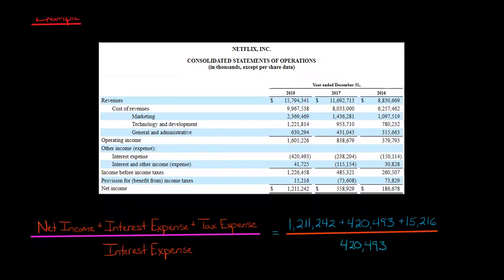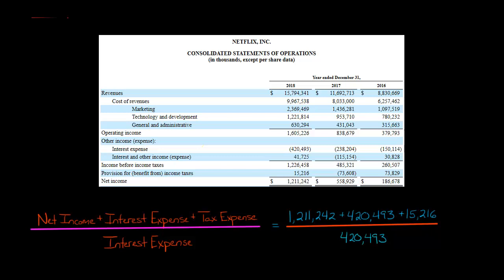We're going to calculate it each way, and I'm going to show you how it's different. If we take the net income plus the interest expense plus the tax expense, these numbers are in thousands, so we've got a little over $1.2 billion of net income for Netflix in 2018. We're going to add back the interest expense, so that $420 million of interest expense is going to get added back. And then, we've got income tax expense of a little over $15 million.